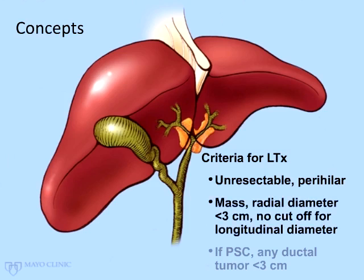We consider all cancers in PSC to be unresectable for the following reasons: the patients often have fibrotic or advanced-stage liver disease; it's usually a field defect, so one looks for dysplasia and finds it in the contralateral side; and doing a Roux-en-Y loop up to damaged bile ducts usually invites problems with further cholangitis.